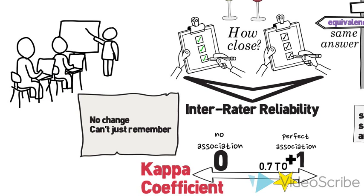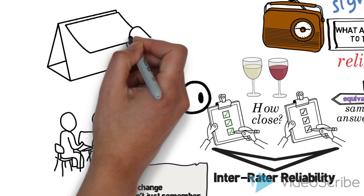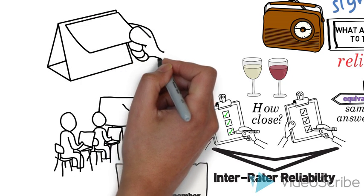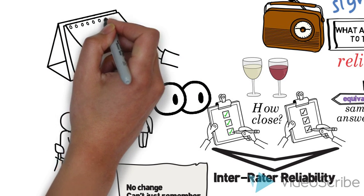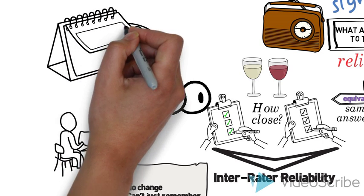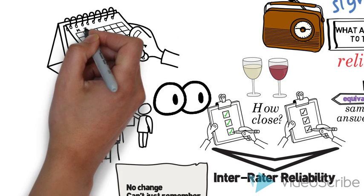It also means keeping tabs on your interviewers as they're in the field to make sure that they keep asking the questions in the same way. Frequently, when you read reports from studies that used interviews, you will see that investigators measured inter-rater reliability before the study started, when the interviewers were being trained.